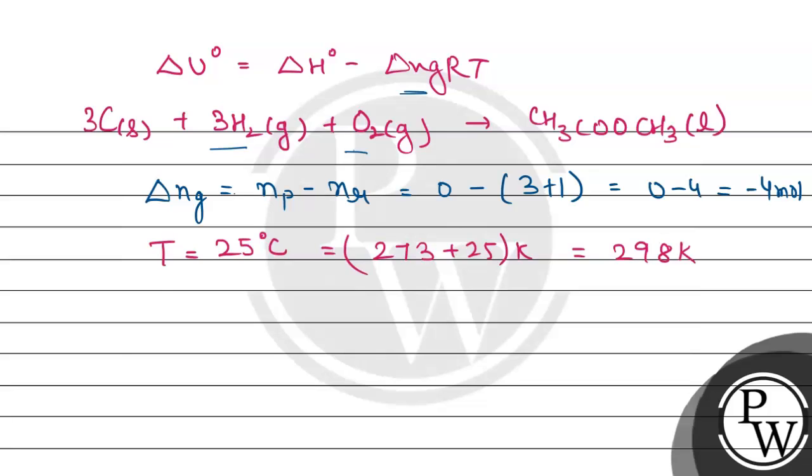The delta H° value is given in the question as -442.9 kJ. The gas constant R value is 8.314 J per Kelvin per mole.